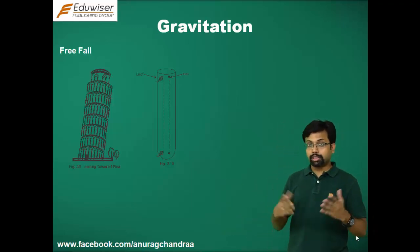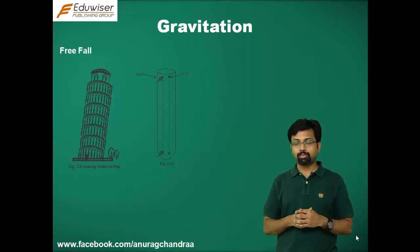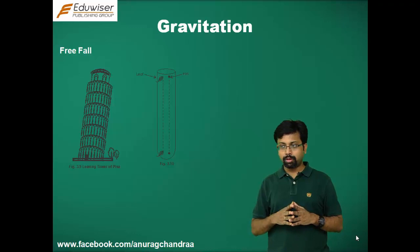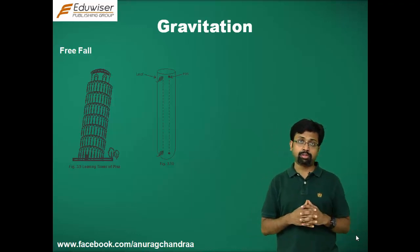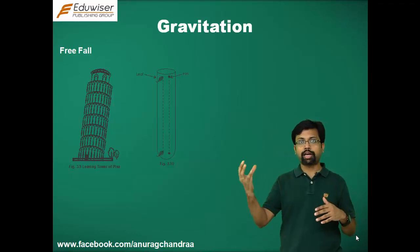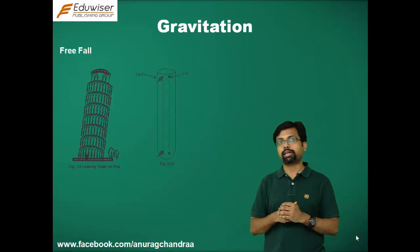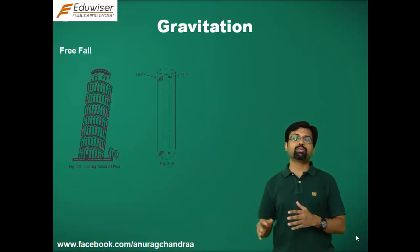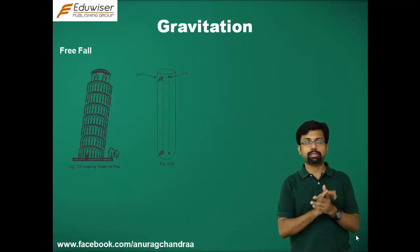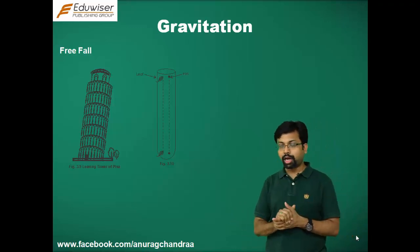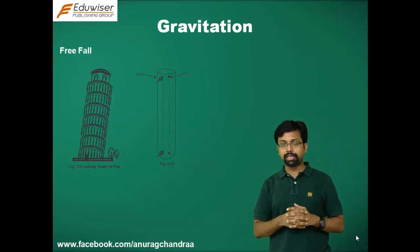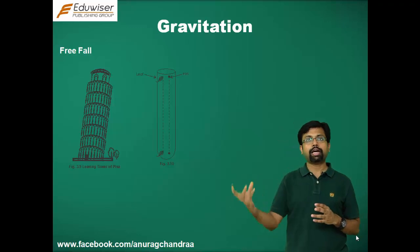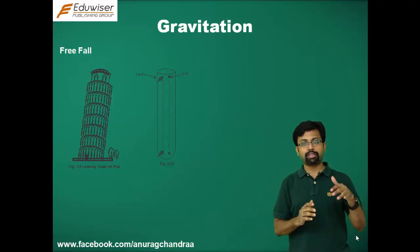That answer is right, and this is what people earlier also used to believe. They performed this experiment and found it to be true. But the reason they attributed to this — that the iron ball falls before the feather — was incorrect. They felt that bodies with higher mass would fall to the ground before bodies with lower mass.